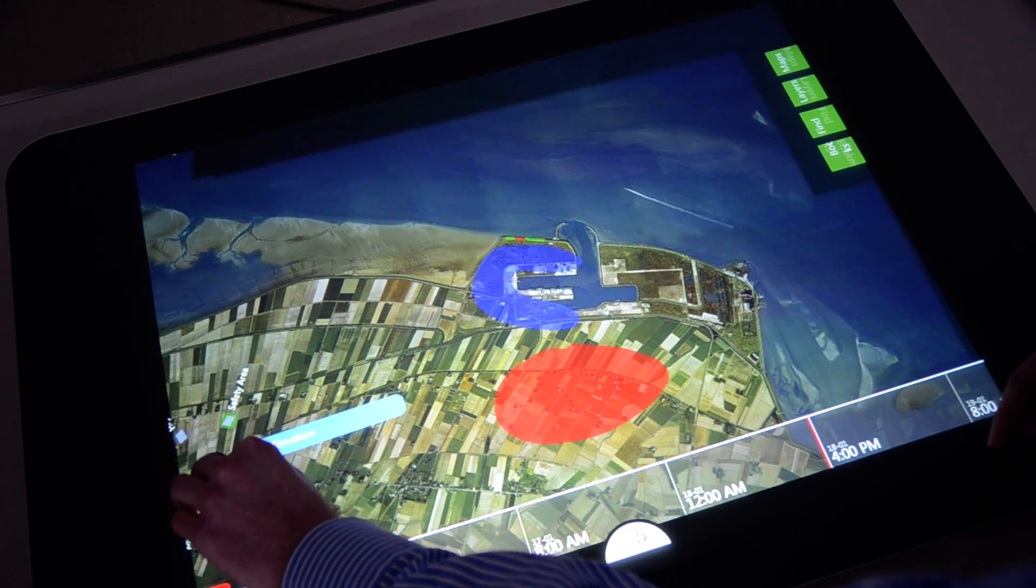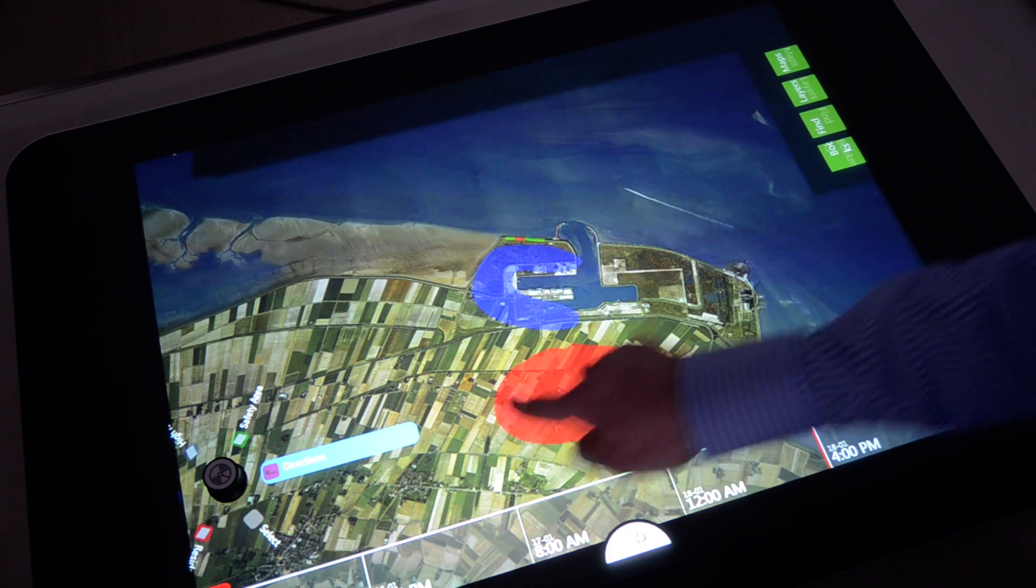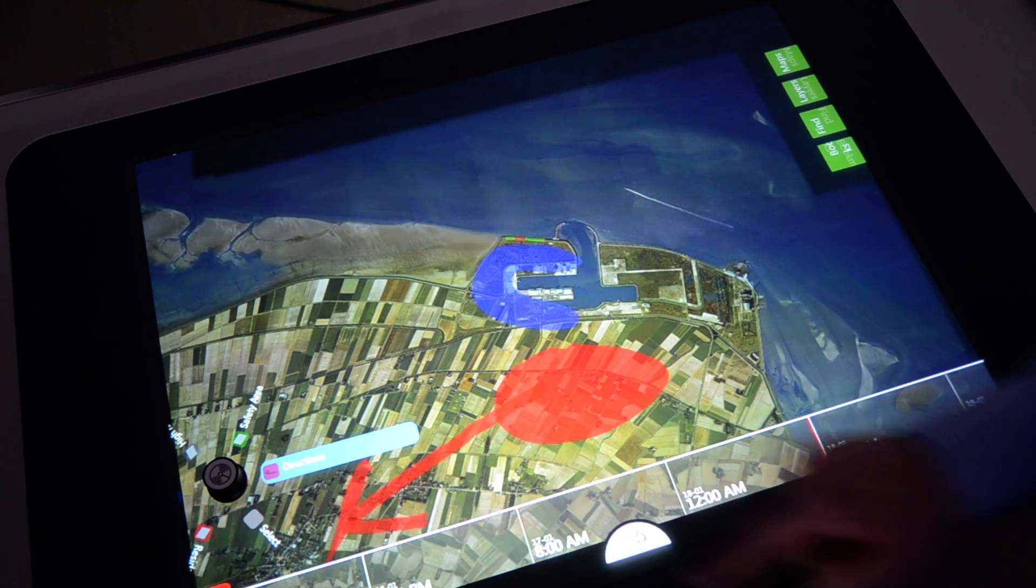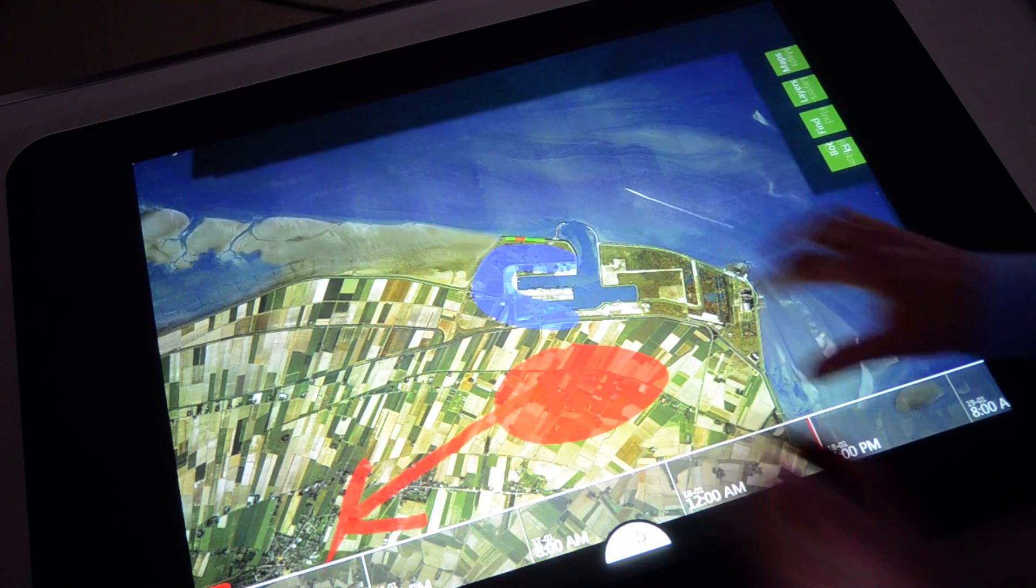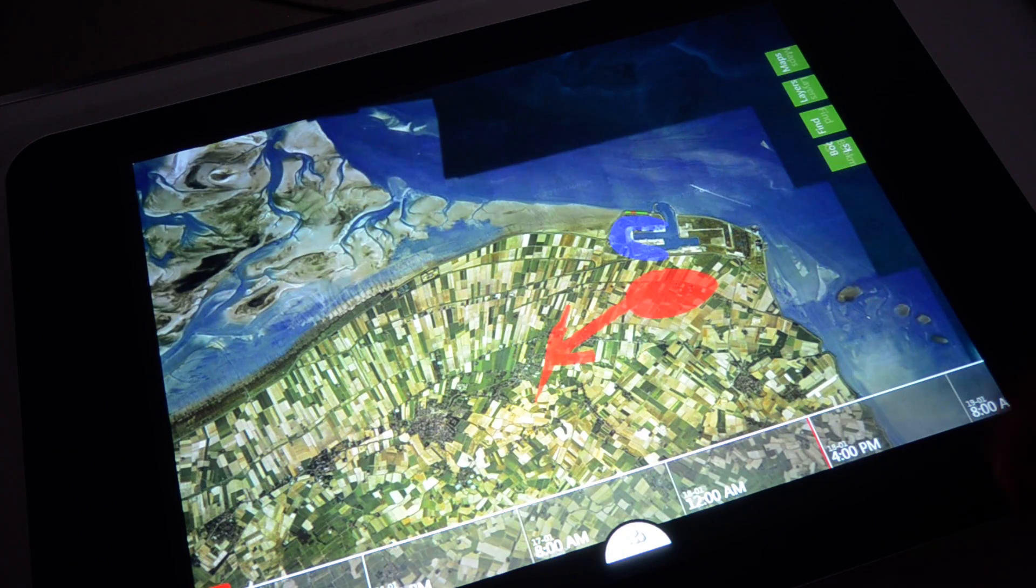And the direction that they need to take is they all need to move here. So what you can clearly see now is I can use the table to make plans and talk about the crisis situation and discuss this with other people.